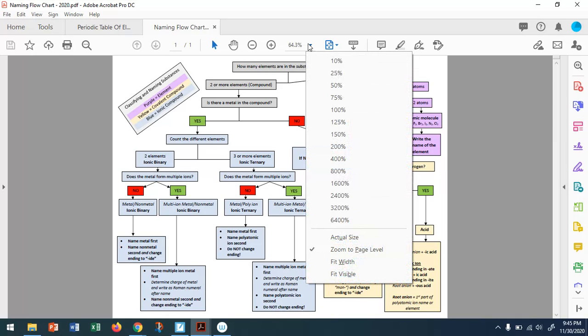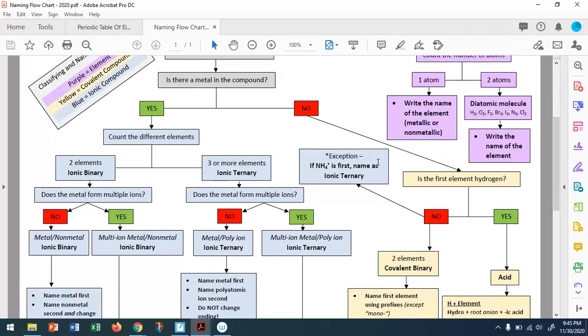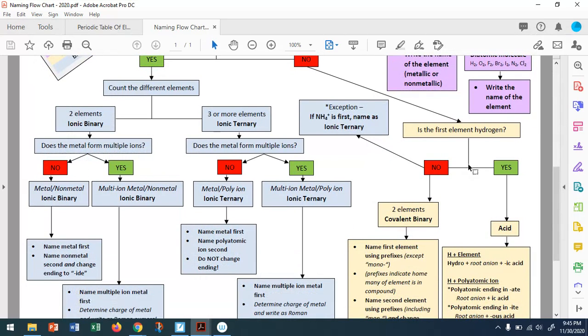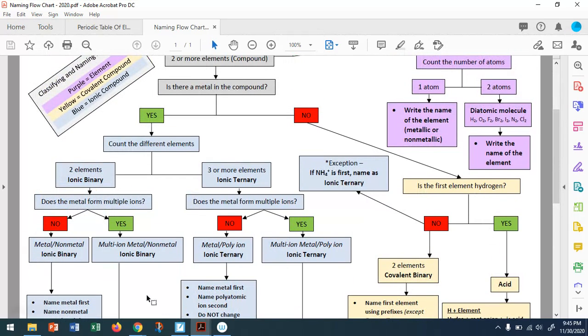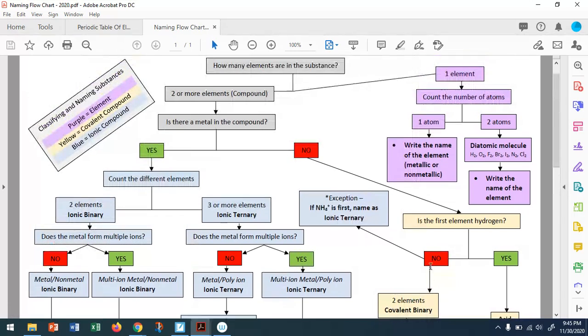So I'm going to zoom us in so we don't have to be quite so overwhelmed with everything all at once. And we're going to take a look at this first part here. You'll notice that there are three color codings within the flowchart. Elements are purple, we have covalent compounds in yellow, and our ionic compounds in blue. Note that the ionic compounds have the most variety of rules.